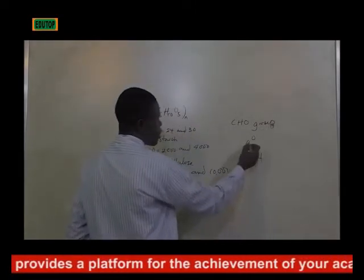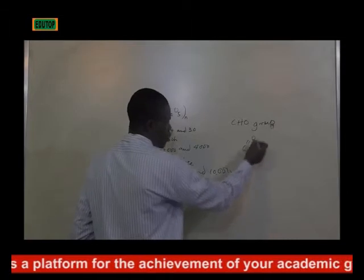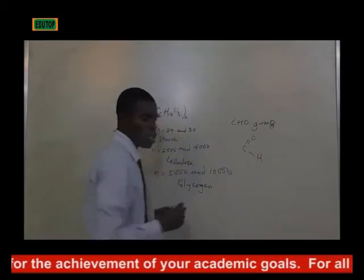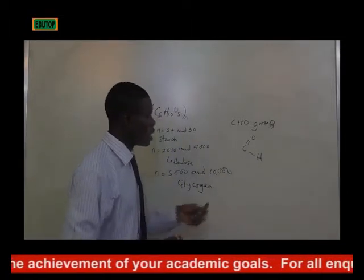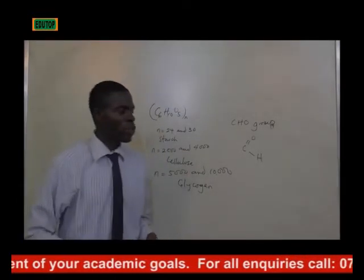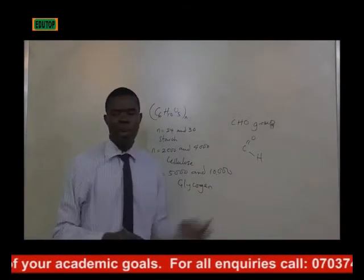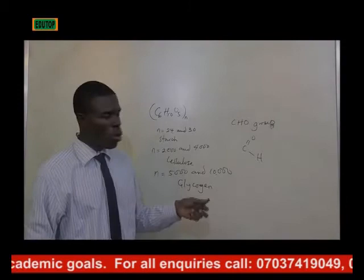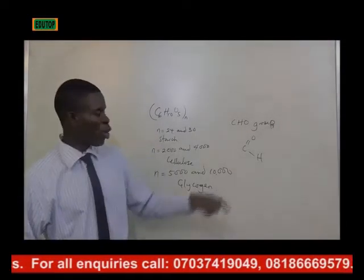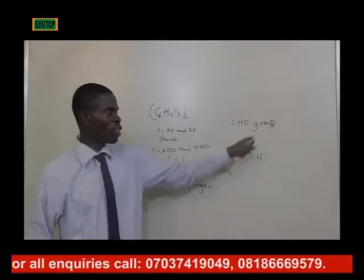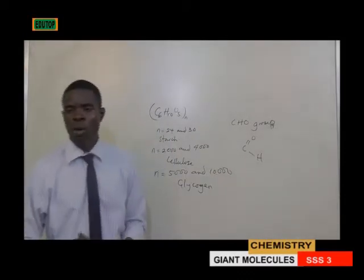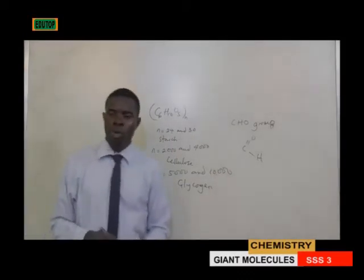The carbonyl group gives glucose its reducing properties. That is why glucose is known as a reducing sugar — because of the presence of the carbonyl group in the CHO group.